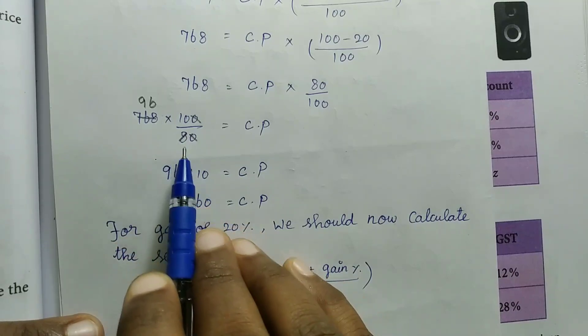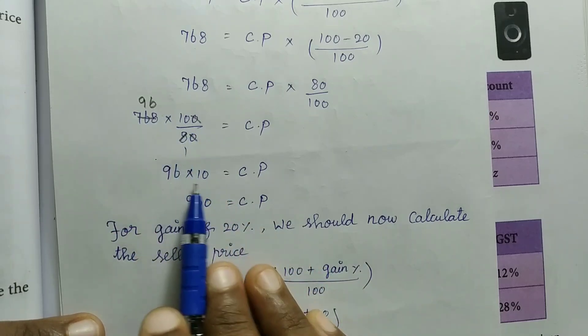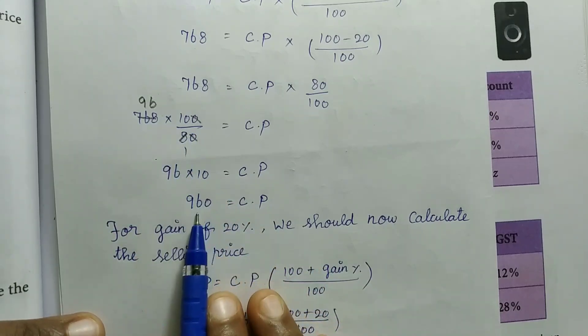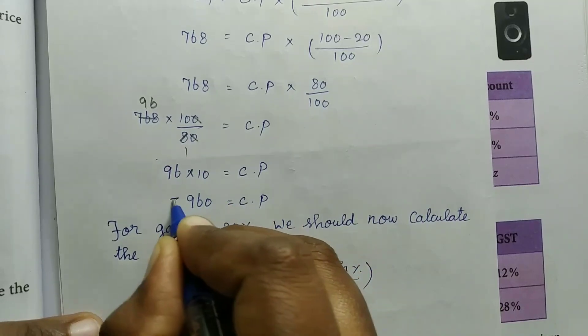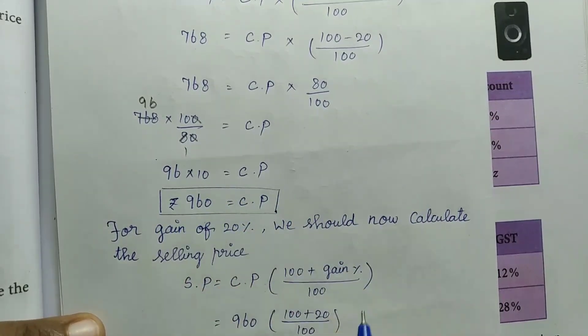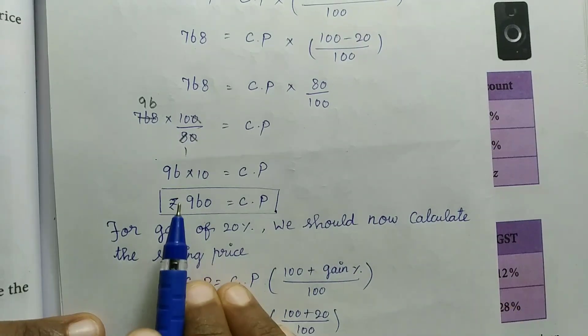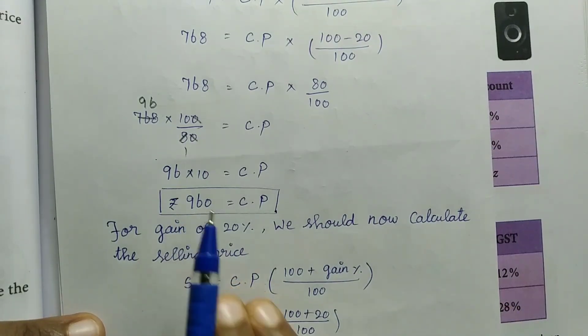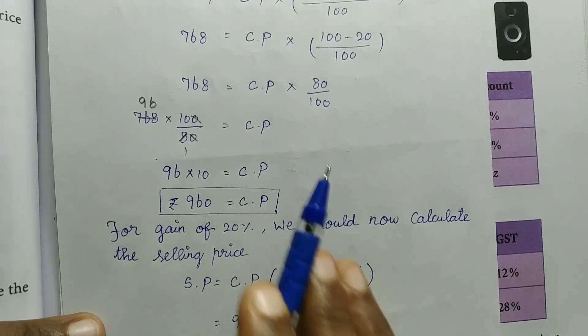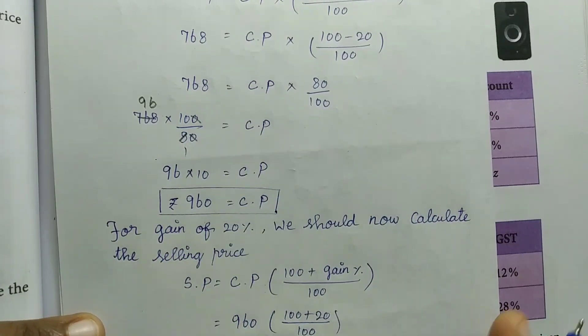Multiplying: 6 times 8 is 48, remaining is 96 into 10. The cost price is 960. This is the CP we found.